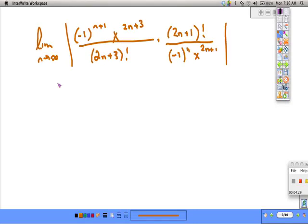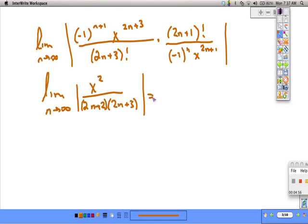When we simplify this, what we're left with is x squared. This is essentially one that we've done before. This limit is equal to 0, which is always less than 1.